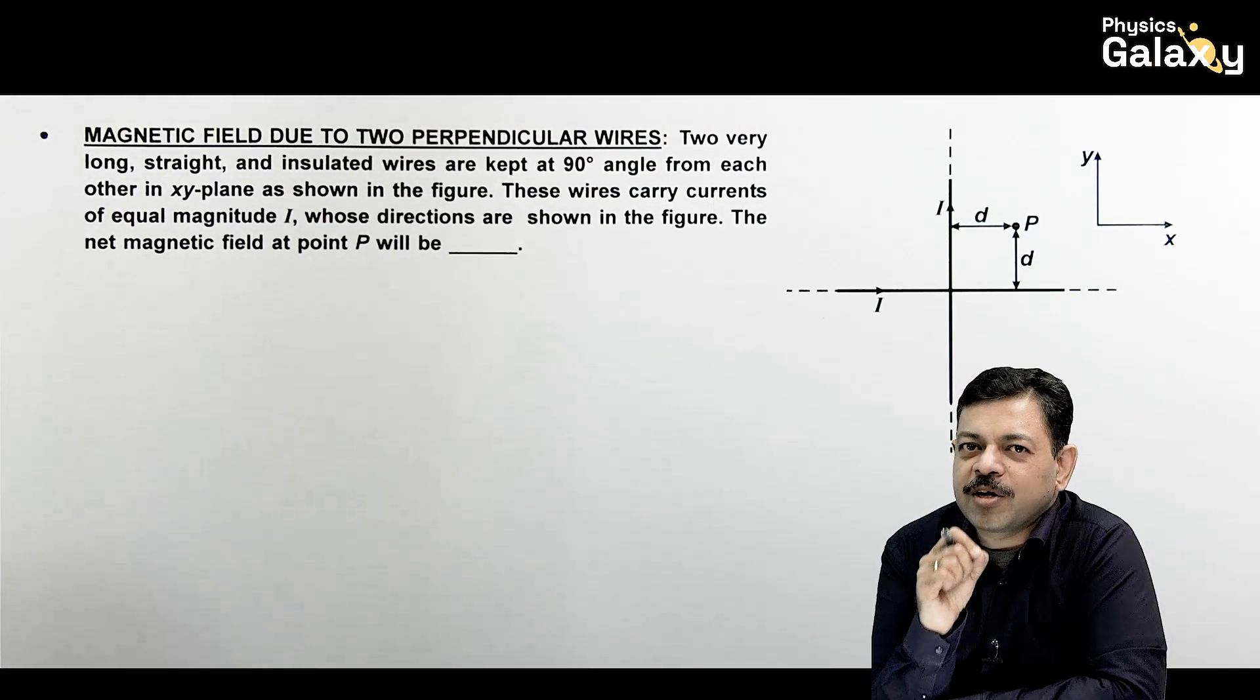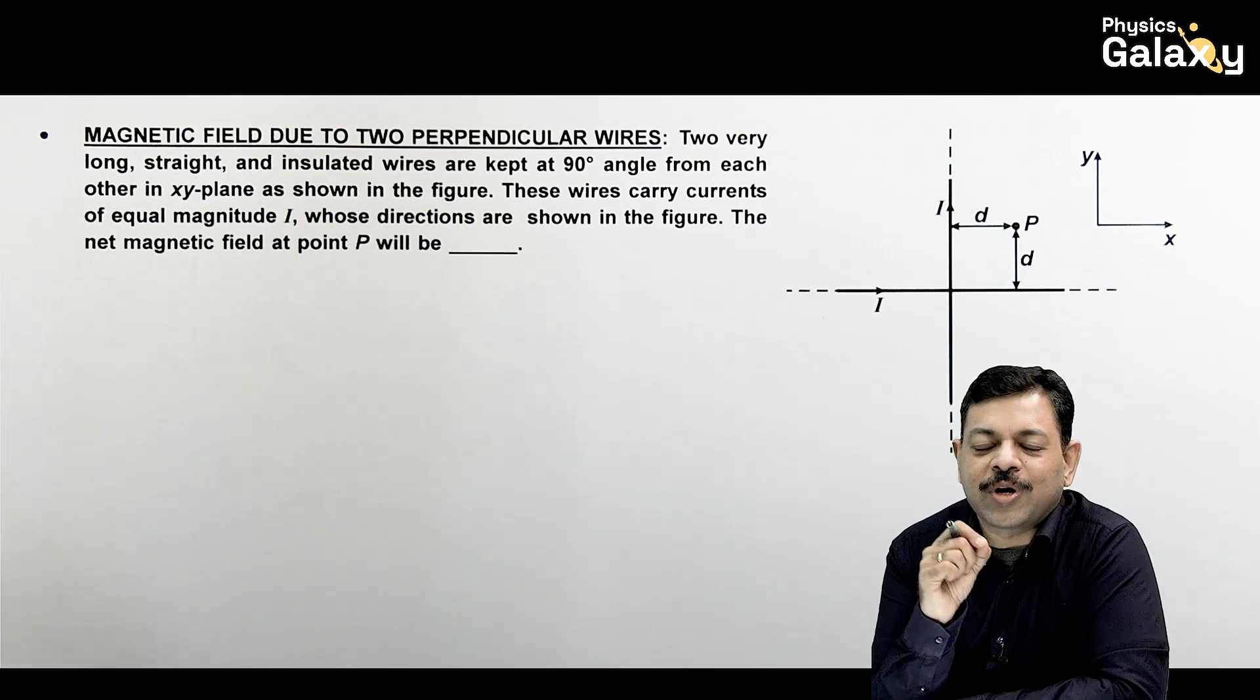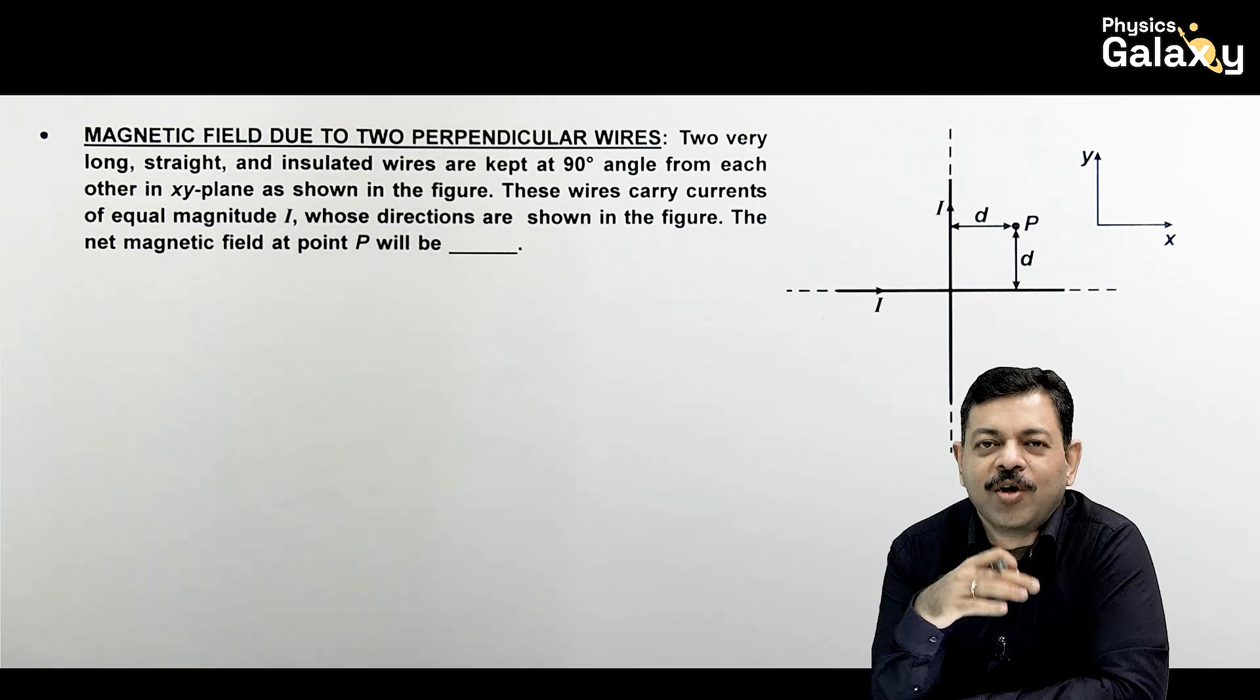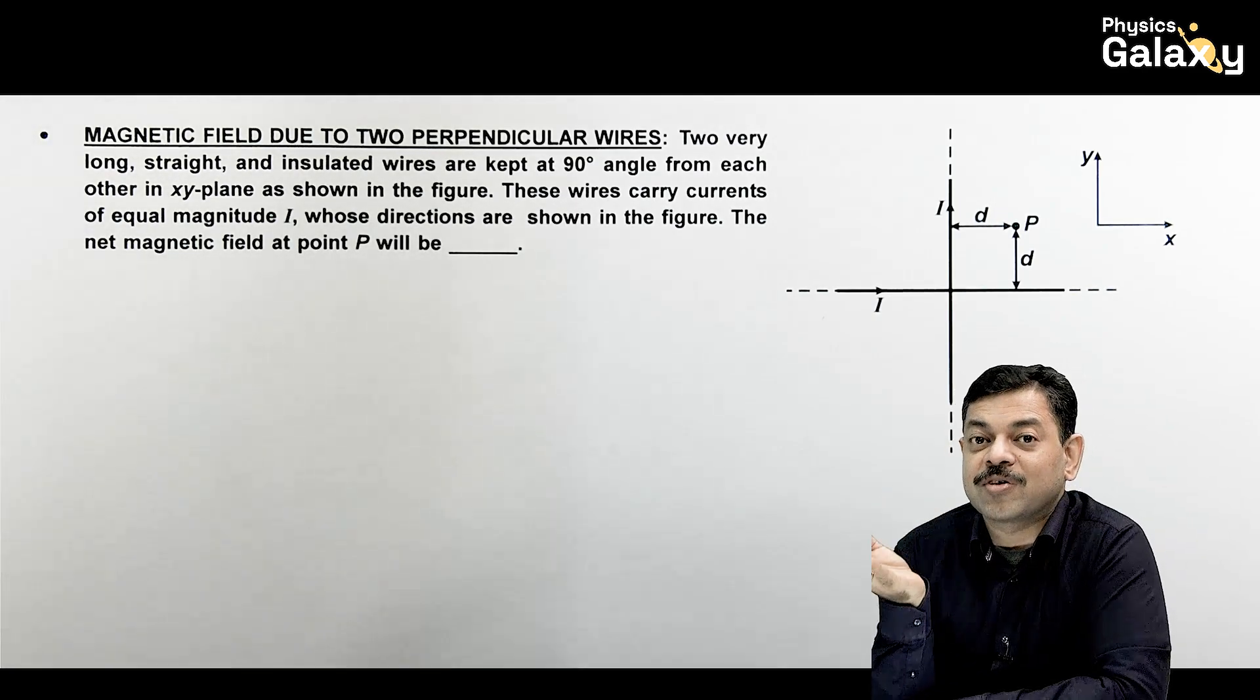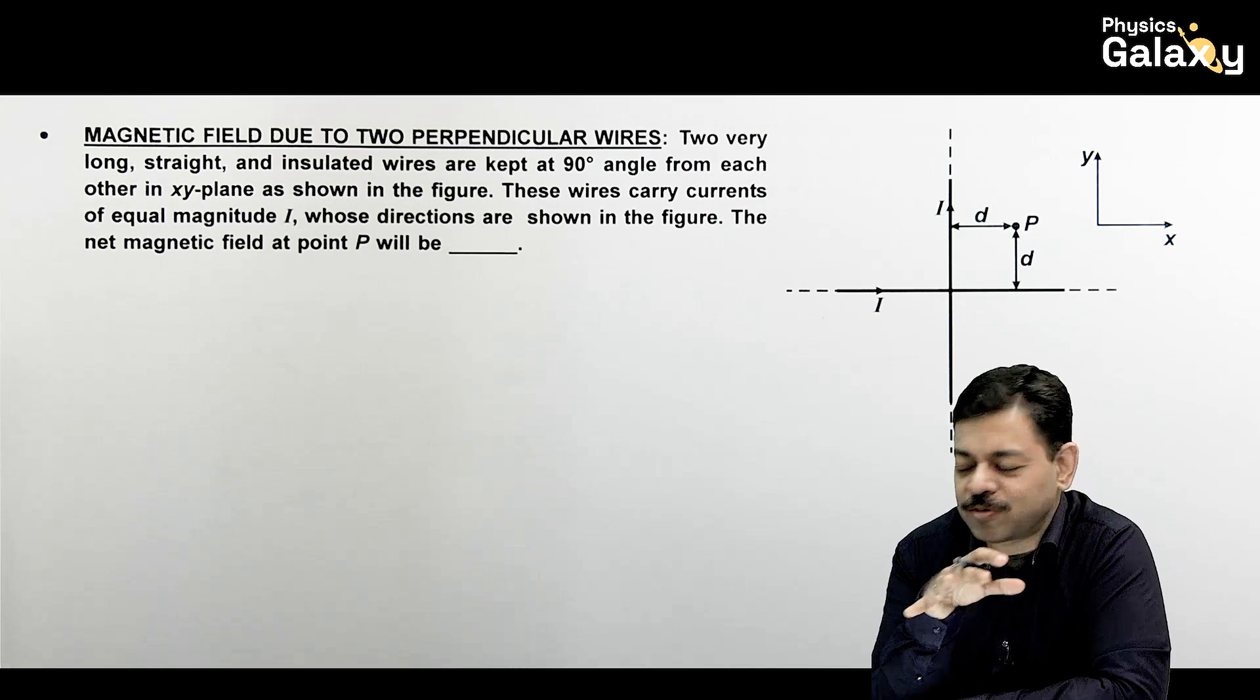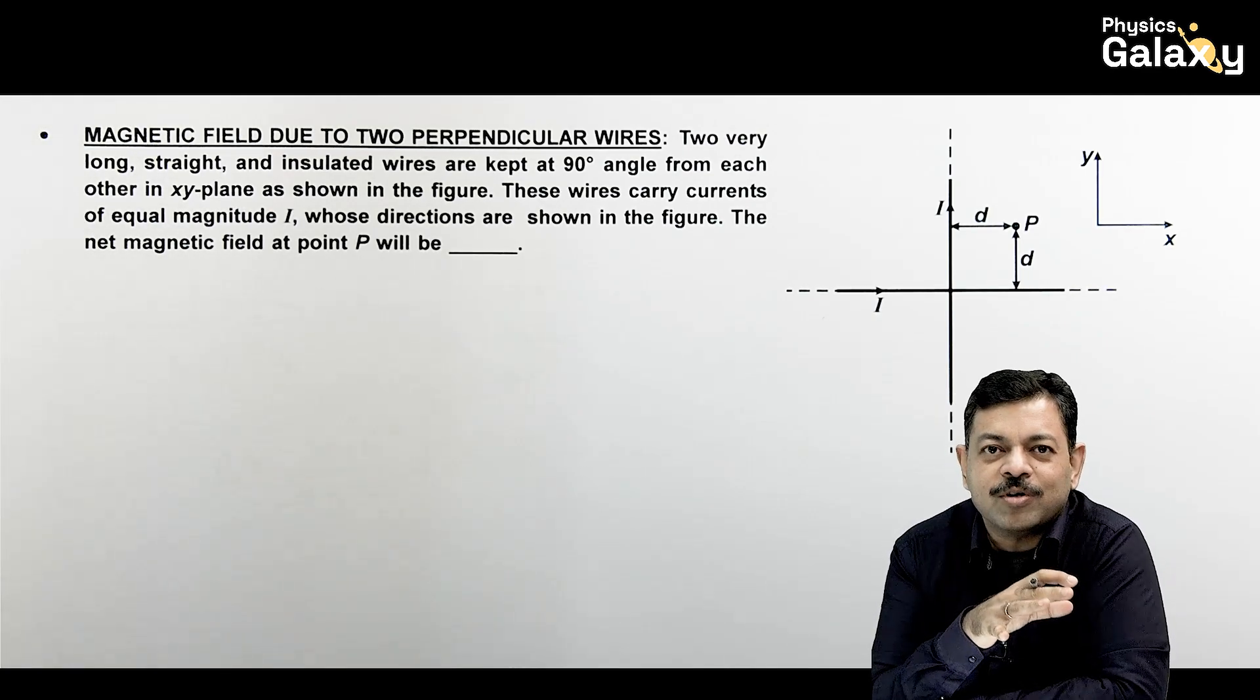In this section of magnetic effects of current we'll be talking about the magnetic field produced due to current carrying wires and moving charges. In the upcoming section we'll talk about current carrying wires in external magnetic field. There are two sections on magnetic field. In this section we'll mainly use Biot-Savart's law and Ampere's law.